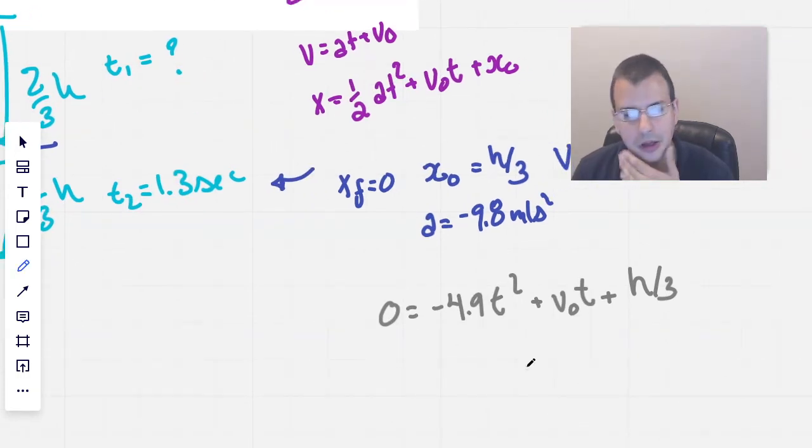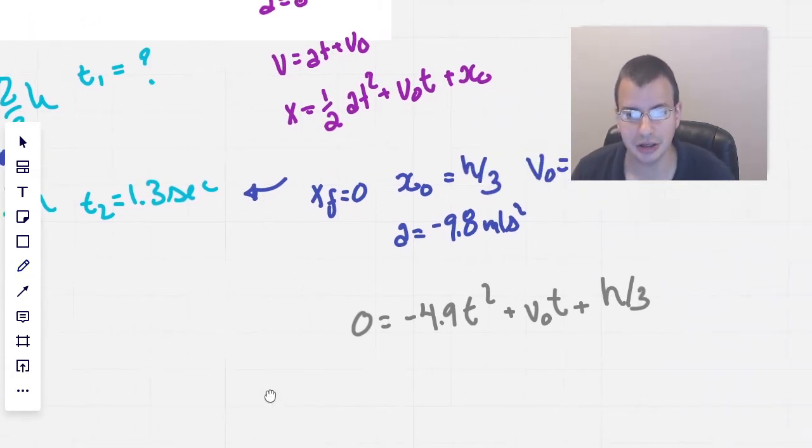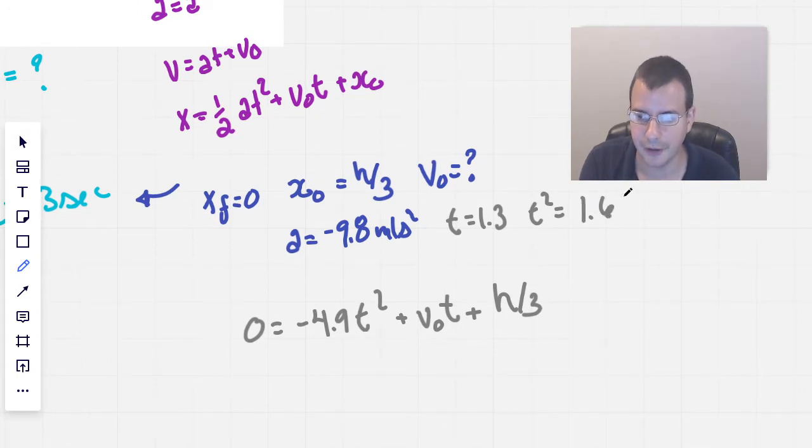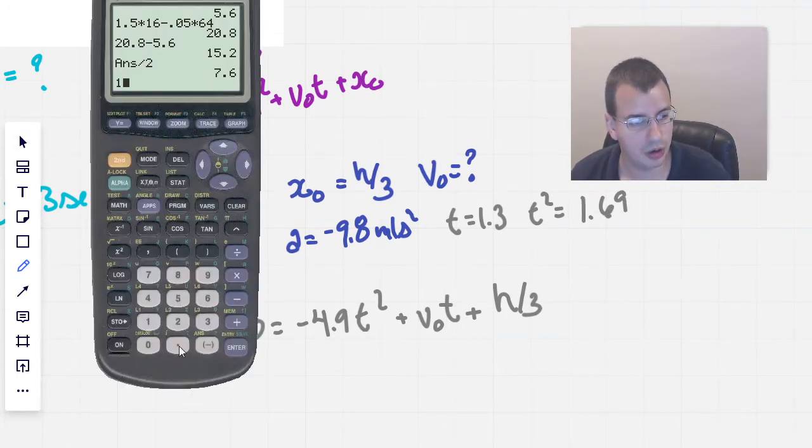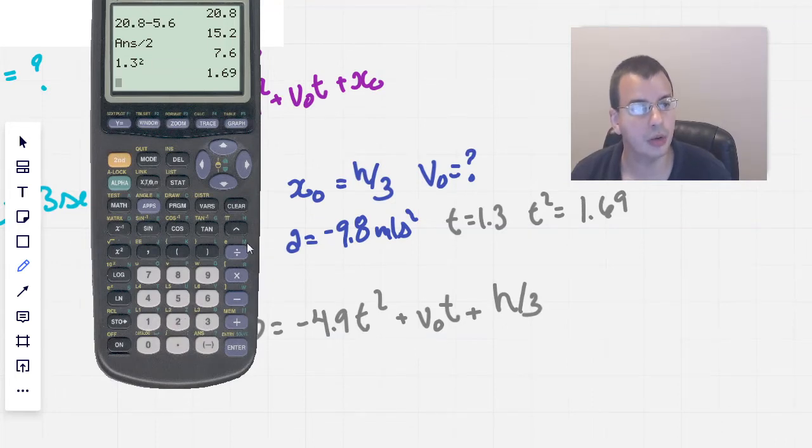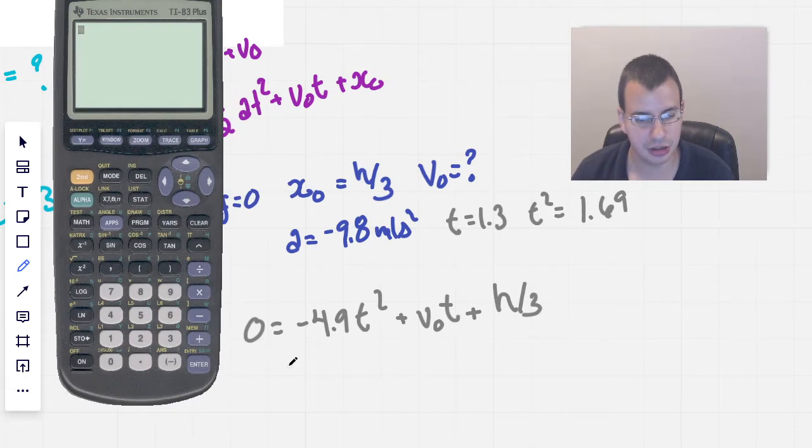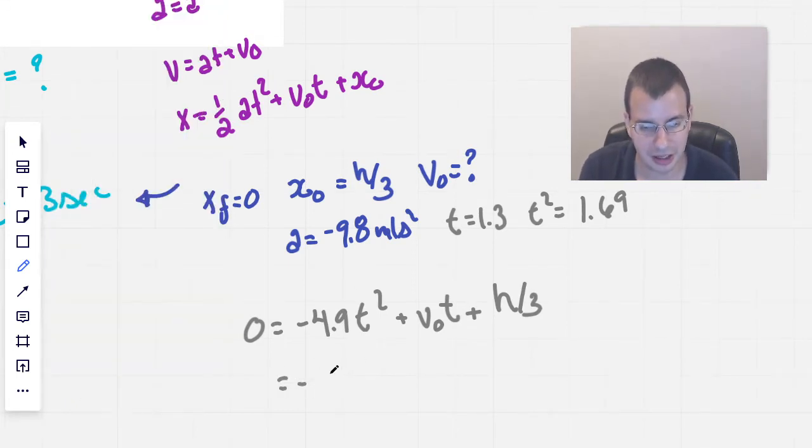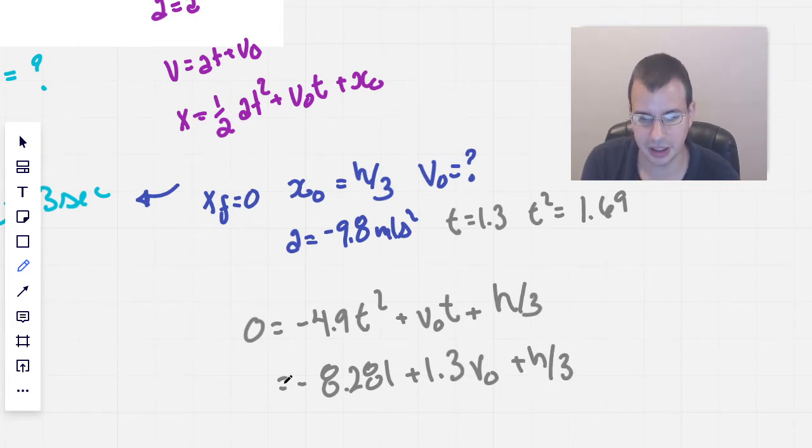Writing this out, we have 0 equals negative 4.9, which is 9.8 times one half, t squared plus V naught t plus H over 3. We know what t is. I should put that in. t equals 1.3, t squared equals 1.69. So, we can do 4.9 times 1.69 equals 8.281, negative 8.281 plus 1.3 V naught plus H over 3 equals 0.